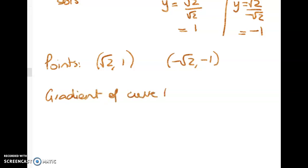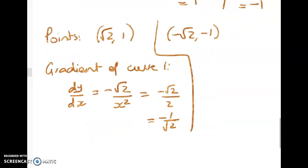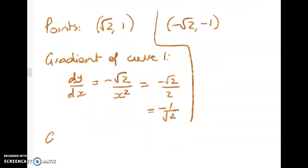So gradient of curve 1 is what? What did we have? Well we had dy by dx is equal to negative root 2 on x squared which is equal to, let's do it for this point first, negative root 2 over 2 which is negative 1 on root 2. Just checking I haven't mucked that up. Now don't bother rationalising the third, just leave it like that and now we'll do the gradient of curve 2.